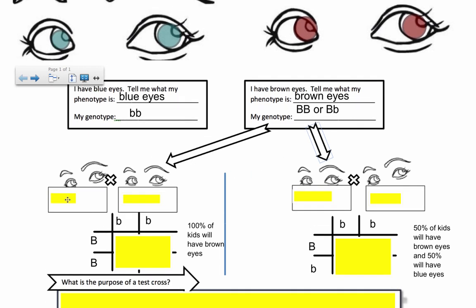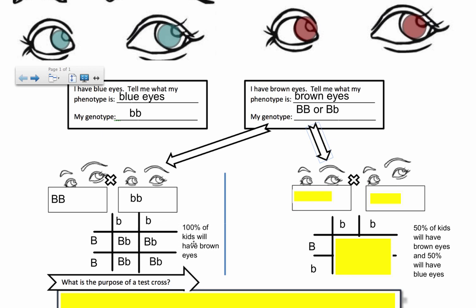Let's take this first situation where I assume their genotype is big B, big B. If they are big B, big B and I cross them with a blue-eyed person who is little b, little b, and I separate out all of the gametes, all four outcomes in the Punnett square will be exactly the same — they will all be heterozygous big B, little b. So 100% of the kids will have brown eyes if this person was homozygous dominant, big B, big B.